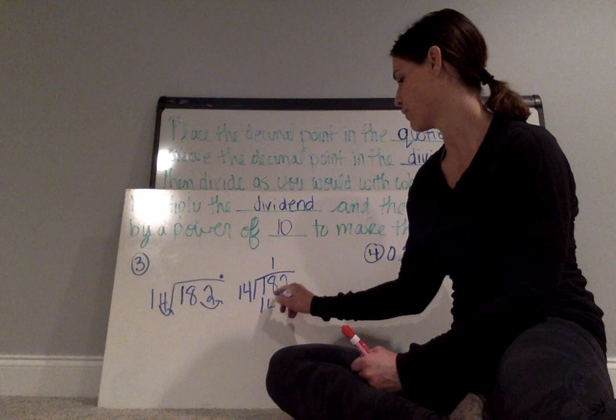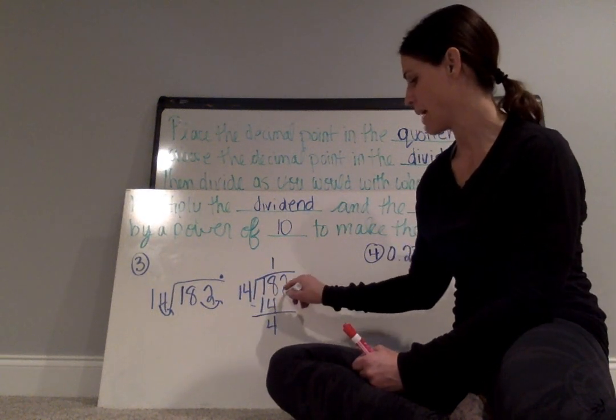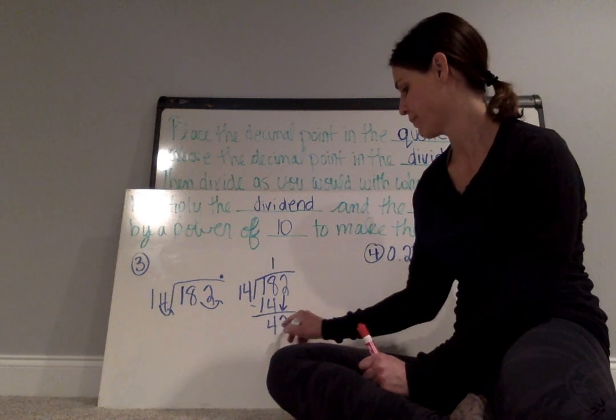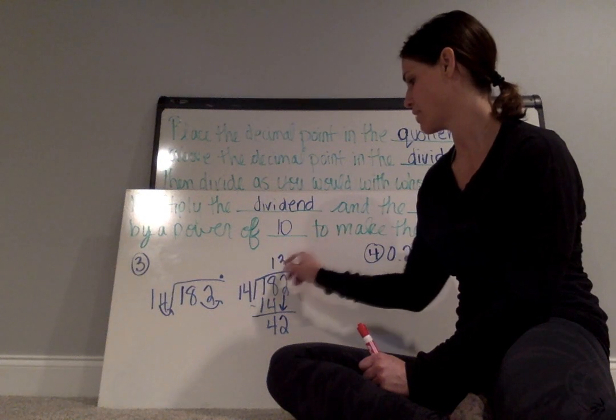1 times 14 is 14. I subtract and I have 4. I bring down my next digit in the dividend, which is 2. 42 divided by 14 is 3.